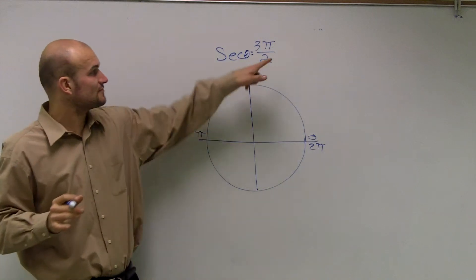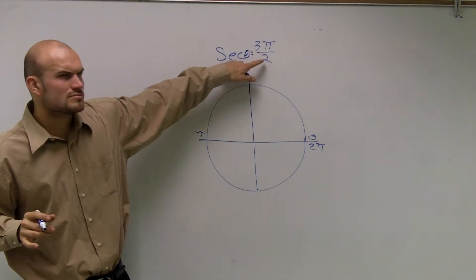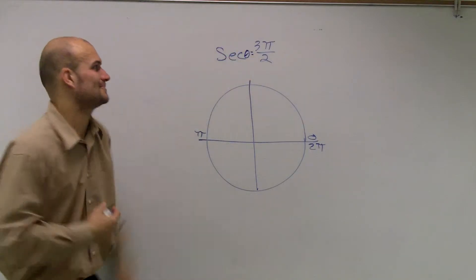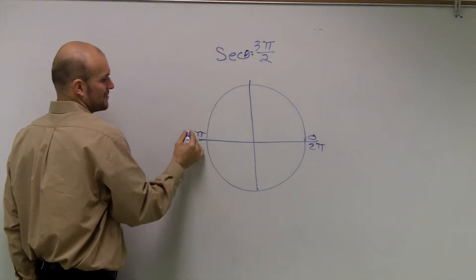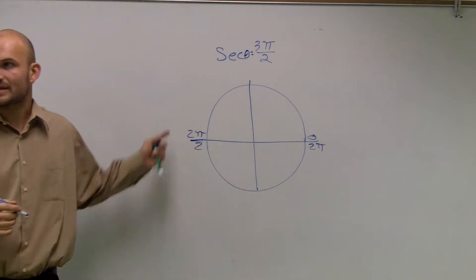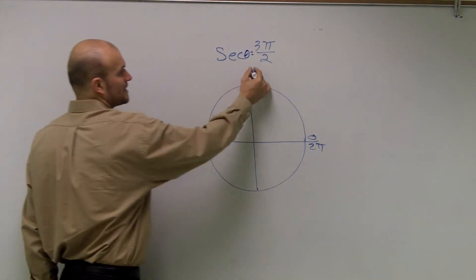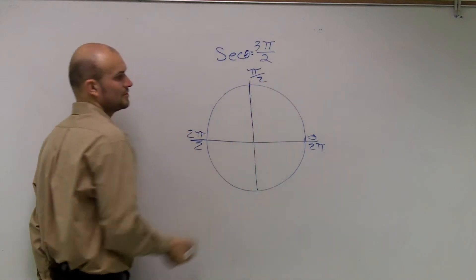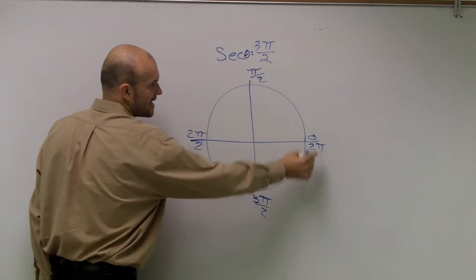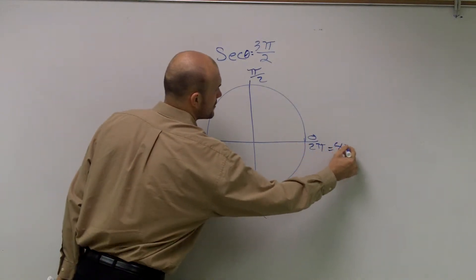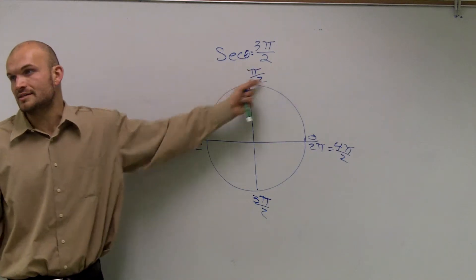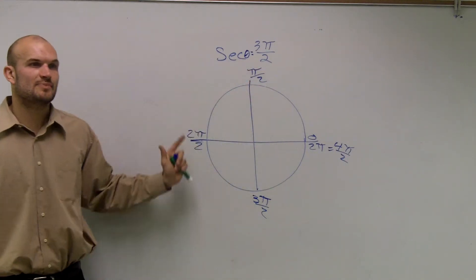What I like to do to make this easier is write 2π as 4π/2. Since that equals 2π, then here would be π/2 (that's one half of it), and here would be 3π/2. Make sure you convert it to rewrite it so you can see it better.